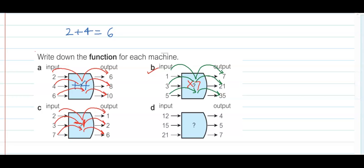The last one — divide by 3. We put a division sign: divide by 3. Let's check: 12 divided by 3 is working. 15 divided by 3 is working. And 21 divided by 3 is working. So far so good.